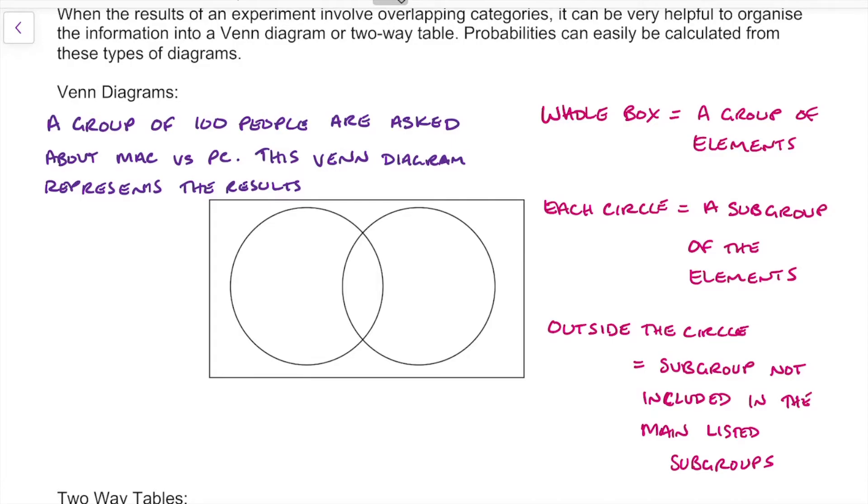So inside of our circle here, we're going to choose one of those circles to represent the subgroup of Mac users. On the other circle, we're going to make that our PC users. And then in the middle is going to be those that like both, and then outside the ones that don't like either.